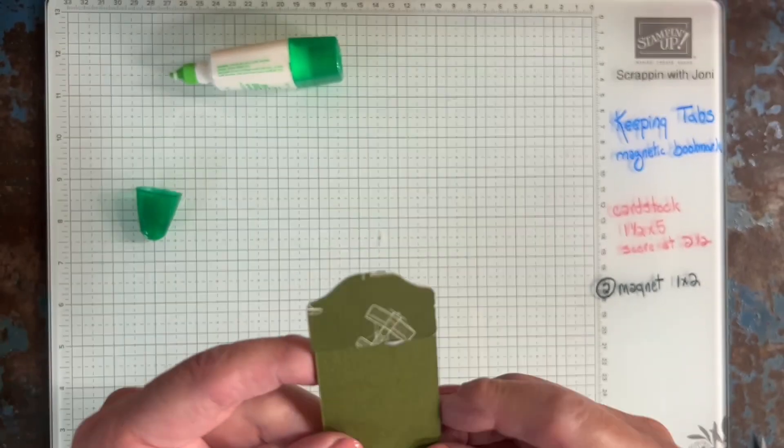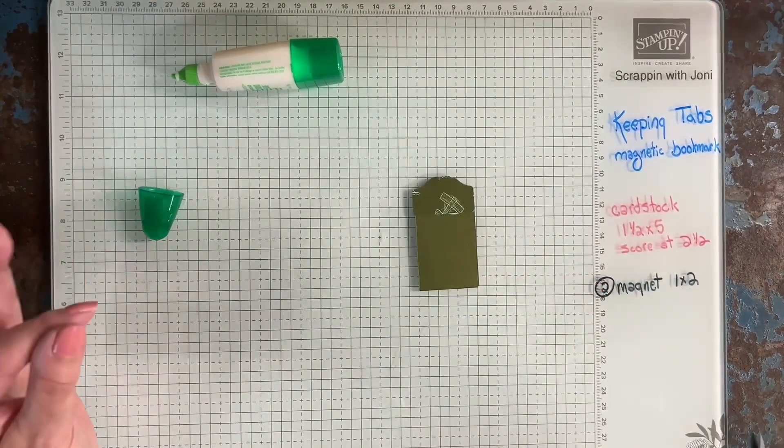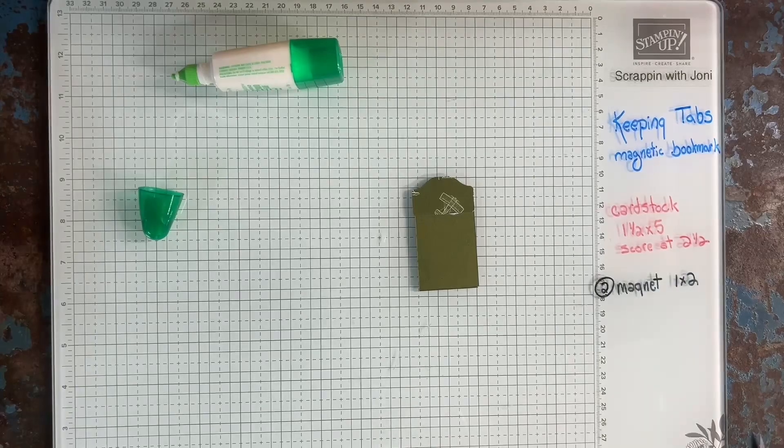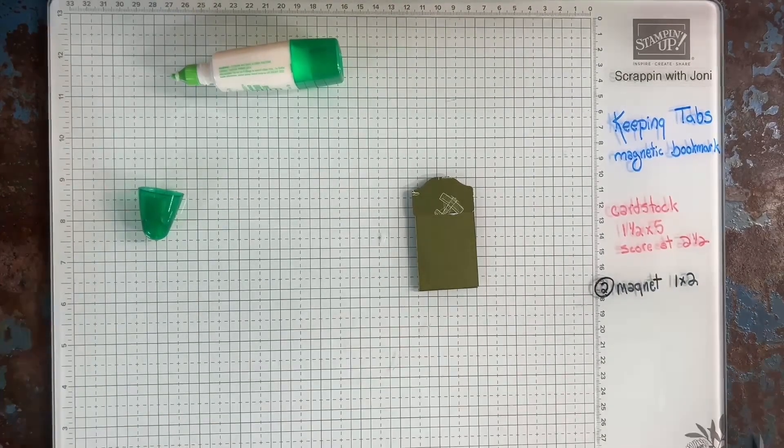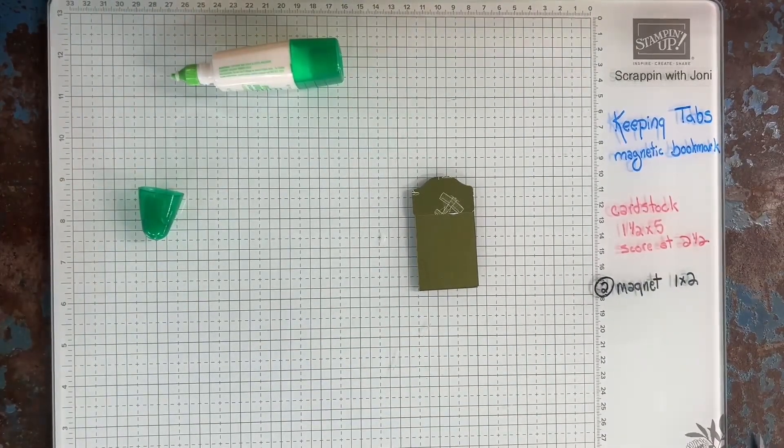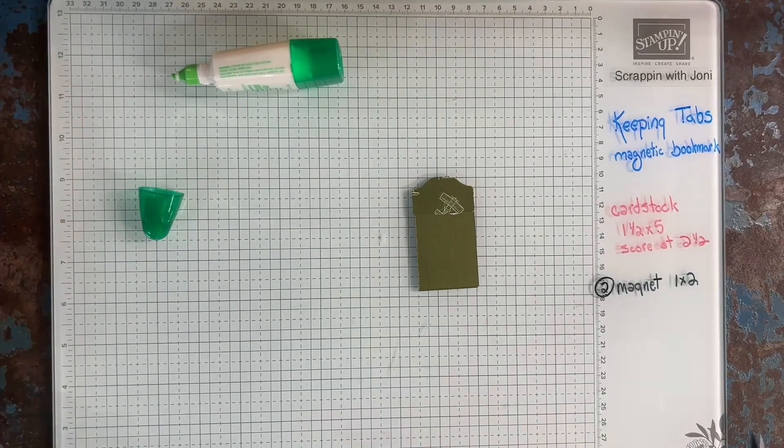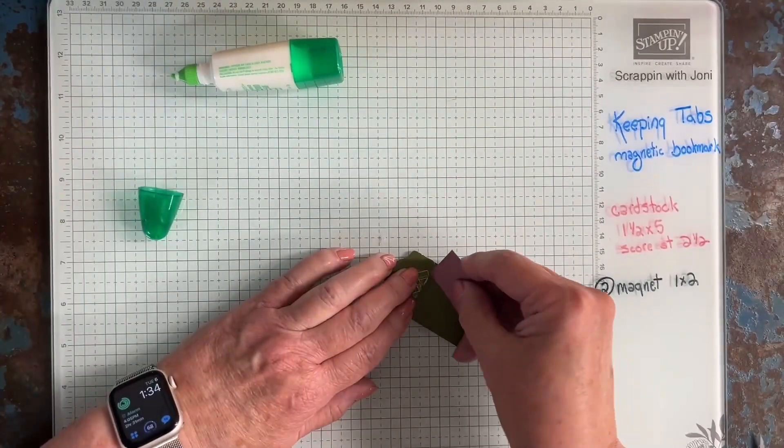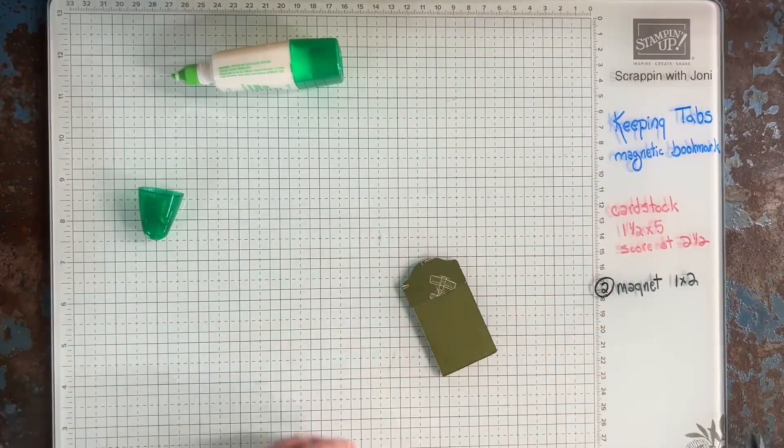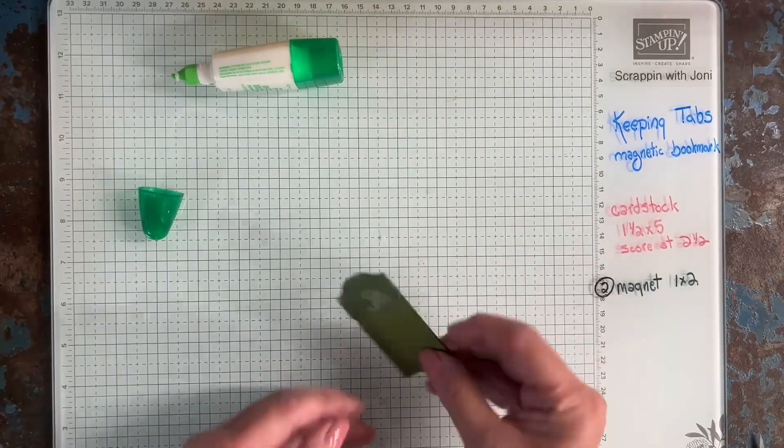So see, I got a little carried away with glue here. So this is what you want to do. You want to just grab a scrap of paper. I'm going to reach into my recycling bin. And then I just lift it off. That's all there is to it. And that's all there is to the magnet.